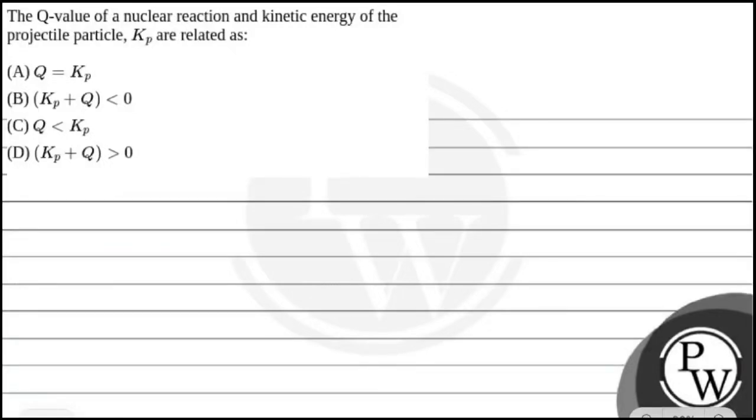Hello, let's read this question. The question says the Q-value of a nuclear reaction and kinetic energy of the projectile particle Kp are related. Our options are: option A, Q equals Kp; option B, Kp plus Q is less than zero; option C, Q is less than Kp; and option D, Kp plus Q is greater than zero.